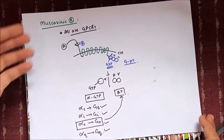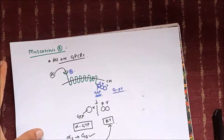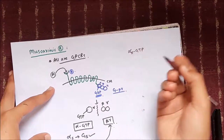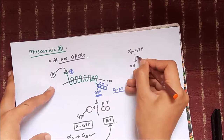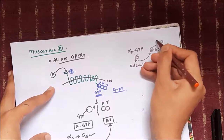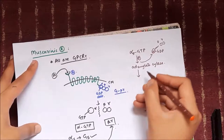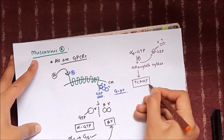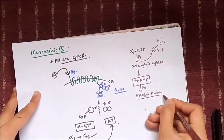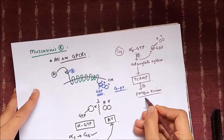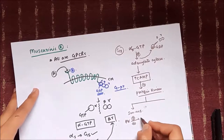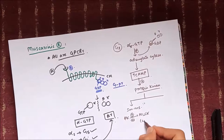In the GS subtype, alpha-S-GTP causes activation of adenylate cyclase enzyme, which increases levels of cyclic AMP. The alpha-S-GTP is itself converted back to alpha-GDP which re-binds to beta-gamma subunits. The increased cyclic AMP stimulates protein kinase A.